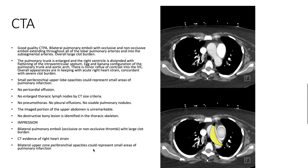On CTA, the patient is noted to have bilateral pulmonary emboli, both occlusive and non-occlusive, extending throughout all of the lobar pulmonary arteries and into the subsegmental arteries.